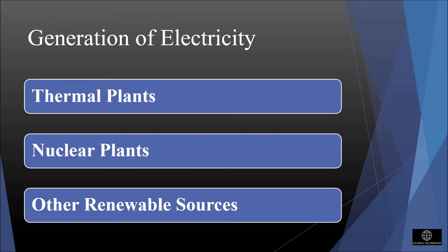Thermal plants: a power station in which the heat energy is converted to electric power is called a thermal power station. Nuclear plants: another type of thermal power plant is the nuclear plant. Here the heating source is the nuclear reactor.